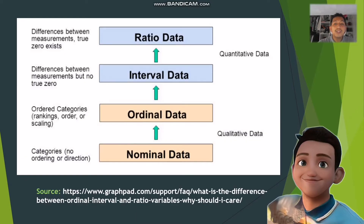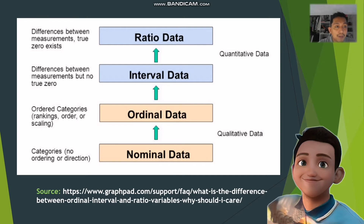As you can see, quantitative data relates more to ratio and interval data, while qualitative data relates more to ordinal and nominal data. Nominal data has categories with no ordering or direction. Ordinal data has ordered categories such as rankings or scaling. Interval data has differences between measurements but no true zero, while ratio data has differences between measurements with a true zero.